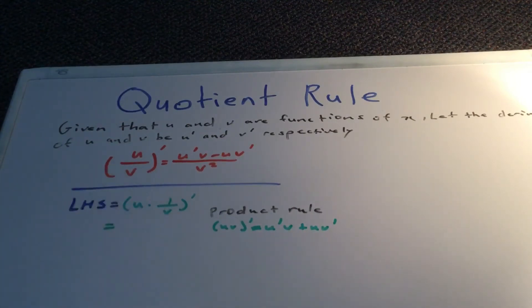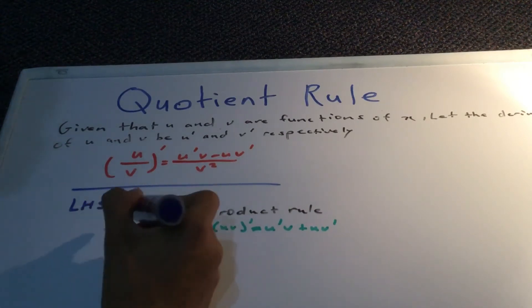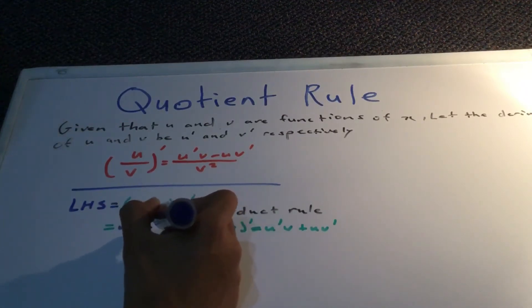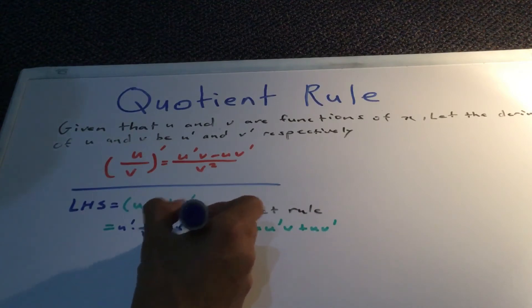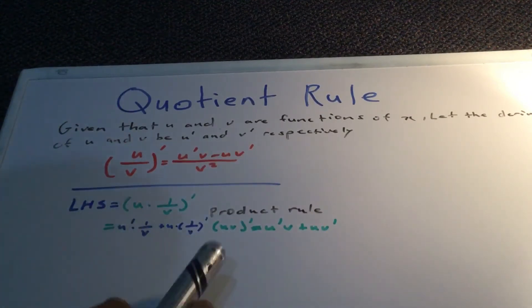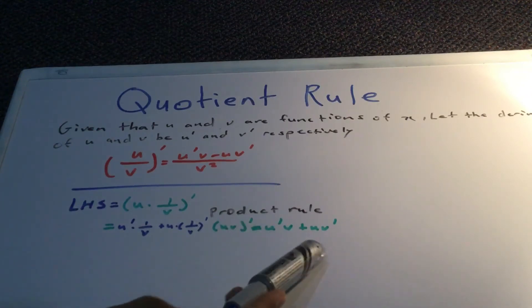So using this to solve this function, we can go like this. So u prime times 1 over v, plus u times the prime of 1 over v. If you don't already know what I've done, I've just multiplied this by this. I'm just following this, by the way.